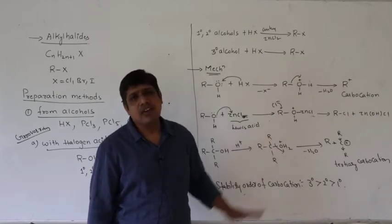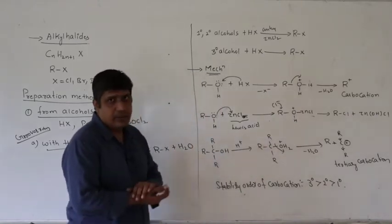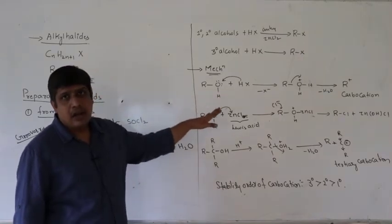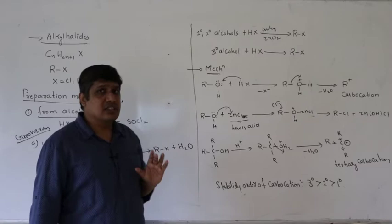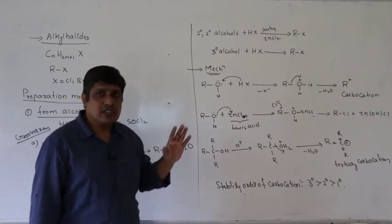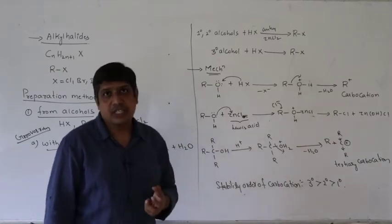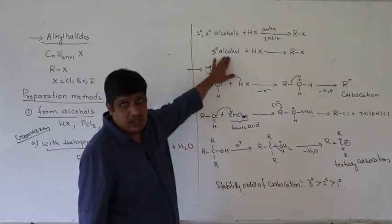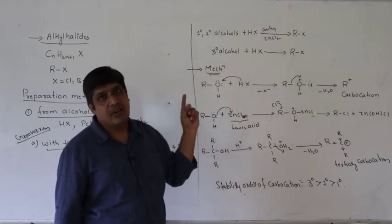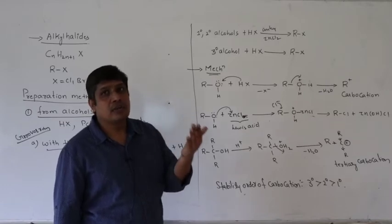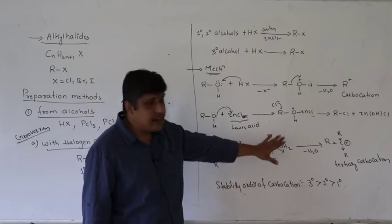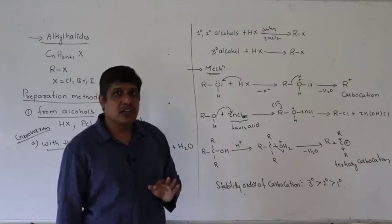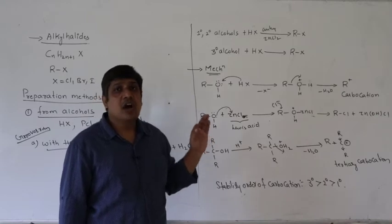Zinc chloride acts as a dehydrating agent, useful in removing water and weakening the carbon-oxygen bond. Can we use concentrated sulphuric acid instead? The answer is no. Concentrated sulphuric acid is a better dehydrating agent, but if used with secondary or tertiary alcohols, the reaction proceeds further, resulting in the formation of olefins — double bond or triple bond products. So the reaction cannot be stopped at halogenation.